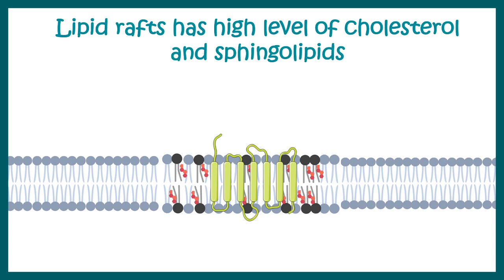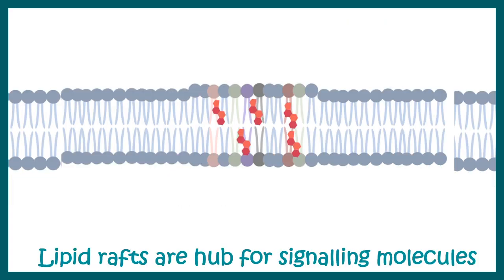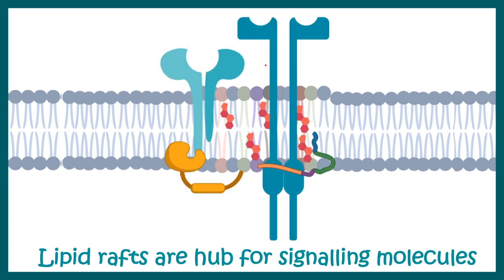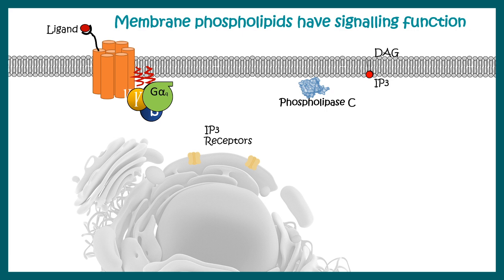Phospholipid composition governs specialized membrane domains known as lipid rafts. Lipid rafts are enriched in sphingolipids and cholesterol and serve as hubs for signaling molecules, including receptors, ion channels, and kinases. These lipid rafts are therefore very important for cellular function.